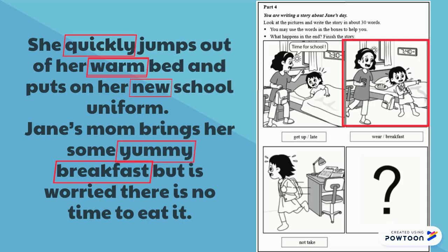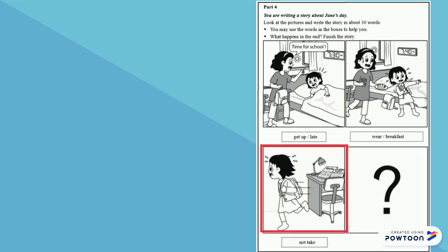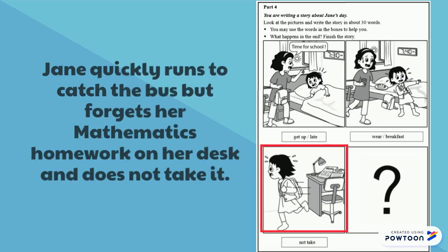In Picture 3, what is Jane doing? Where is she going? And what else can you see in the picture? Jane quickly runs to catch the bus, but forgets her mathematics homework on her desk and does not take it.